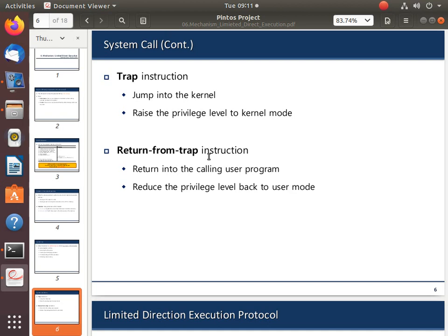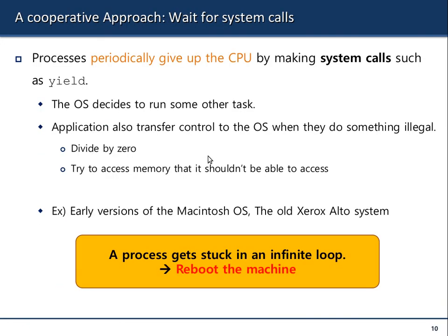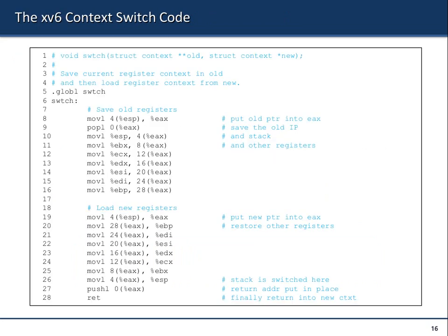However, when the process switches to kernel mode and issues a system call, it uses a different stack. This is called the user stack, and this one is the kernel stack. When you issue a system call, the context of the process is saved to the kernel stack. When it returns back, it can go back to the original process. Always remember that when you have a process, it uses both the kernel stack and the user stack.